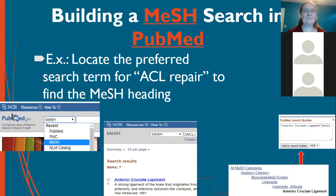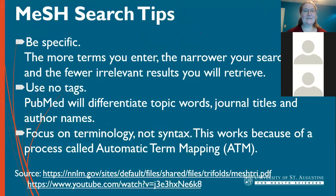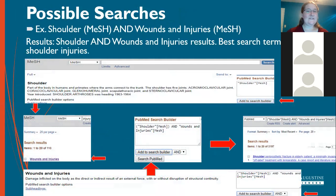Here are some tips for MeSH — you can review them on your own. Be specific, don't use tags or parentheses, just search normally. The more keywords you use, the more you narrow down your search and the fewer results you get. If you have any trouble, contact a librarian for help. For example, searching 'shoulder' and 'injuries' in MeSH shows that 'shoulder' is the best keyword, but for 'injury,' the best MeSH term is actually 'wounds and injuries.' Click 'Add to Search Builder' and then do your search in PubMed.